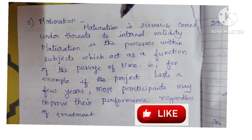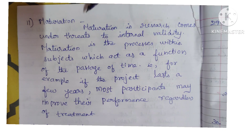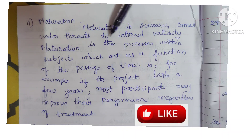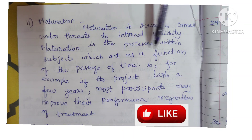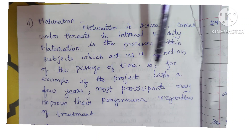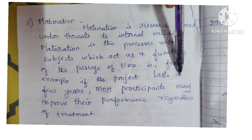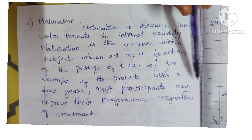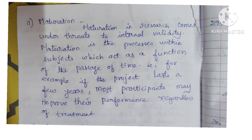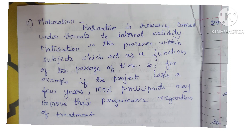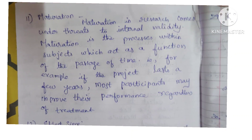Next is maturation. Maturation in research comes under threats to internal validity. Maturation is the process within subjects which acts as a function of the passage of time. For example, if the project lasts for a few years, most participants may improve their performance regardless of any treatment. That is called maturation, which occurs over a period of time because of growth and development.